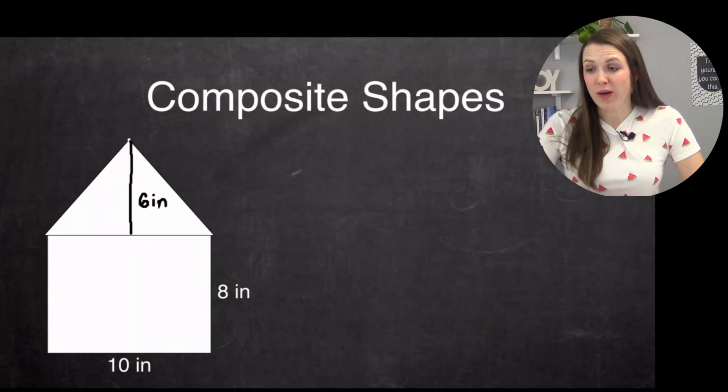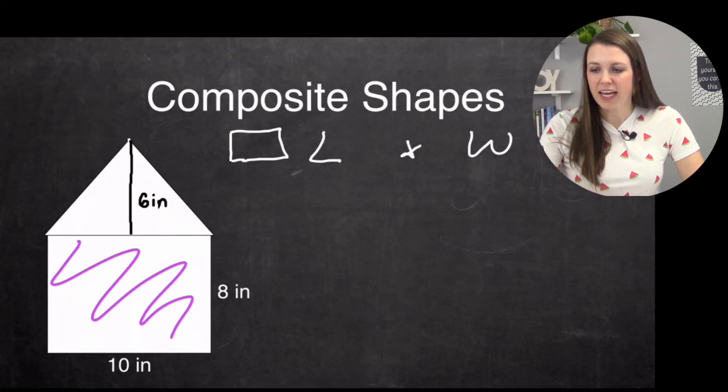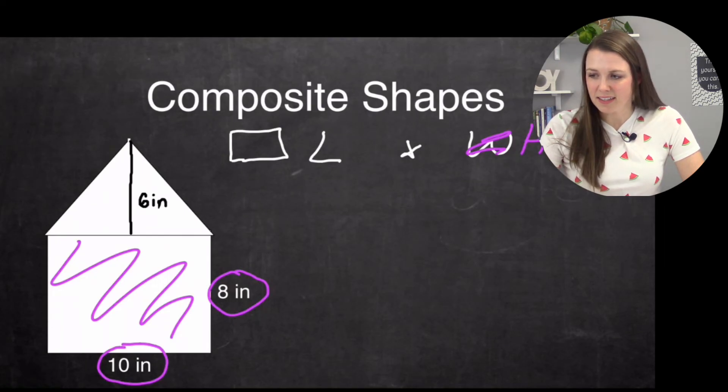We're going to just start with the rectangle that's at the bottom, because we know that is length times width, that's how you find the area of a rectangle. So the rectangle here, I have my 10 inches and my eight inches, or I guess like I said before, times height, length times height. So I have the length is 10 times the height, which is eight. And that gives me 80.